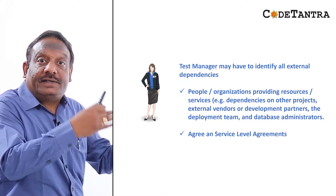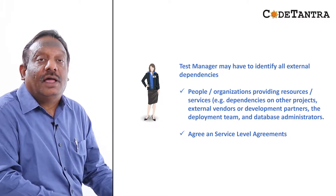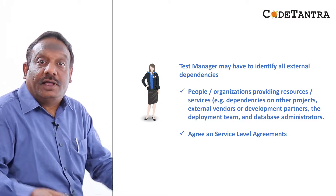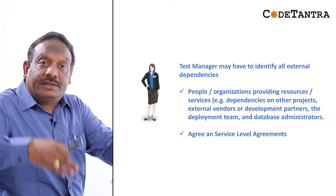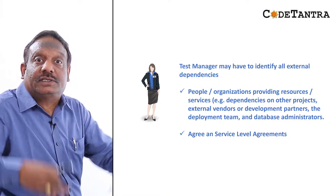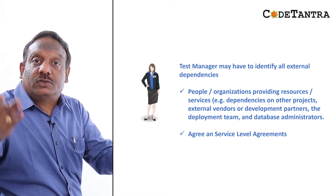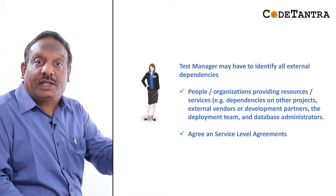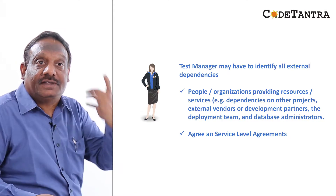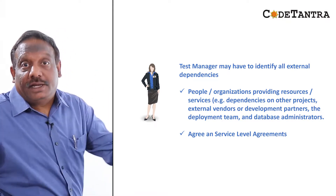The test manager may also have to identify external dependencies — such as people or organizations providing resources, third-party or outsource partners, the deployment team, database administrators, or third-party web service providers. For example, if the software uses third-party web services, you may have to engage those companies and agree on service level agreements. These are all important considerations at the time of test planning.